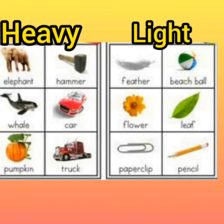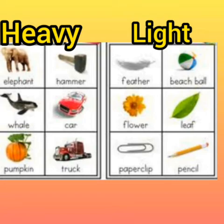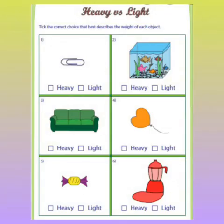So to summarize: elephant is very heavy, blue whale is heavy, car and pumpkin are heavy, tractor is heavy. Feather, ball, flower, leaf, paper clip, and pencil are light. Now I will show you a few worksheets that you will complete.